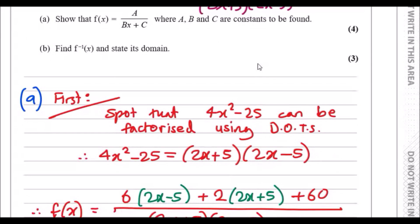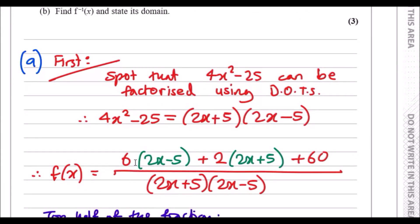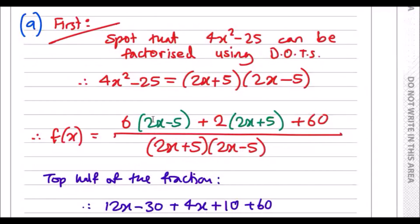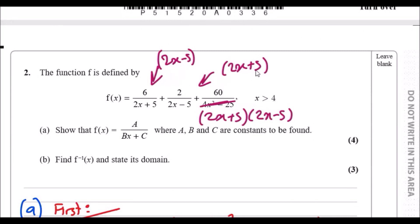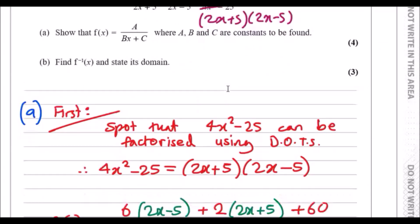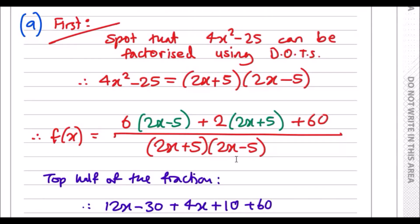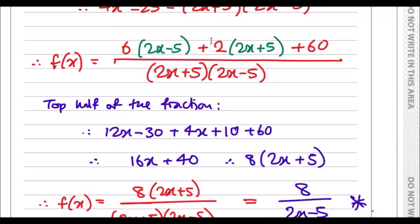Okay, so when you do that you can then actually combine this to a single fraction. So it looks like this: times in 6 by 2x minus 5, times in 2 by 2x plus 5, and then adding all these together all over the common denominator. You can then simplify.